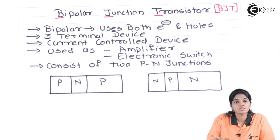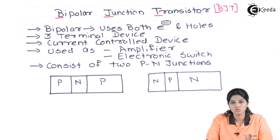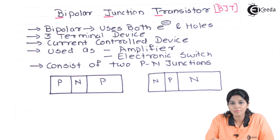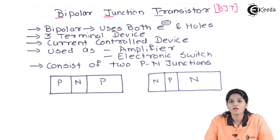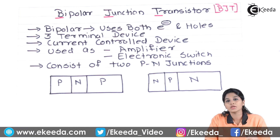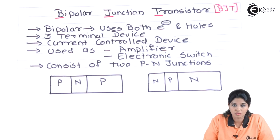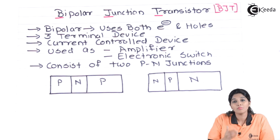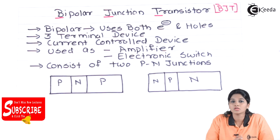Amplification is nothing but the process of increasing the strength of a weak signal. So in a communication system, if the received signal is weak, then we need to amplify it so that we can get the proper output. Another application of the transistor is that it is used in digital electronic circuits as an electronic switch so that it can operate in on state and off state.